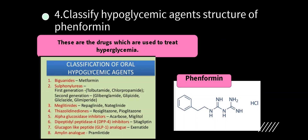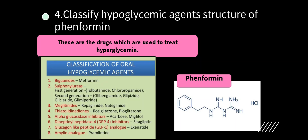Fourth question: classify hypoglycemic agents and give the structure of phenformin. Hypoglycemic agents are drugs used to treat high glucose levels — also called anti-hyperglycemic agents. Classification: biguanides (metformin), sulfonylureas, meglitinides, thiazolidines, alpha-glucosidase inhibitors, dipeptidyl peptidase inhibitors, glucagon-like peptide analogs, and amylin analogs. The structure shown is phenformin. Uses: it is used to treat the hyperglycemic condition.